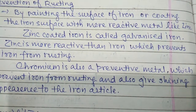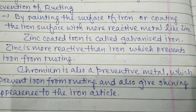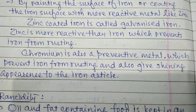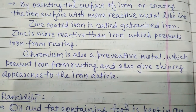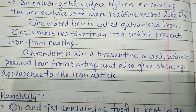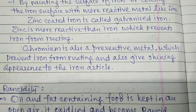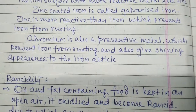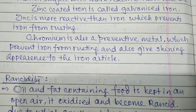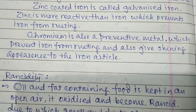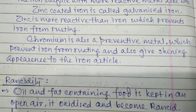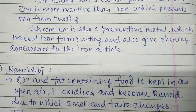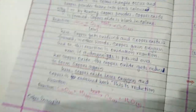When zinc is coated on the iron surface, it is called galvanized iron. Galvanized sheets are available in the market and are used as roofs of factories, houses, and shops. Since zinc is more reactive than iron, the zinc rusts instead and protects the iron. Chromium also prevents iron from rusting and makes the surface shining. Many automobiles and household articles made of iron are coated with chromium.